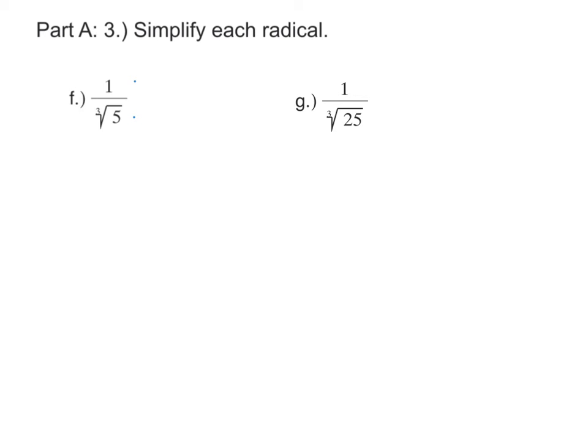We are going to have to multiply both numerator and denominator by a cube root. But in order to cancel with a cube root, I'm going to need a third power. Right now I have 5 to the first power. In order to make it 5 to the third power, I would need two more fives.